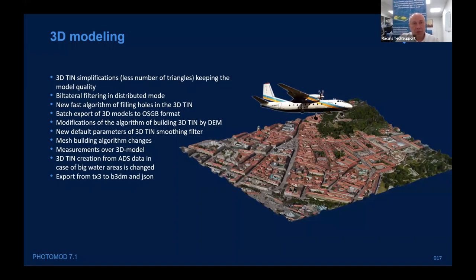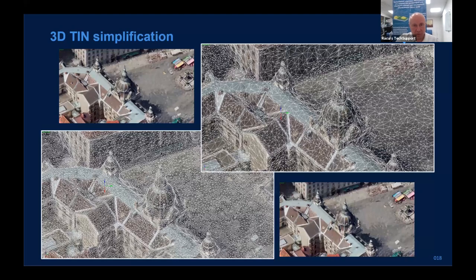3D modeling improvements: new filters, new algorithms for filling holes, a fast algorithm for filling holes, batch export, changes in mesh-building algorithm, capability to make simple measurements over 3D models, and 3D creation from ADS data. TIN simplification example: the left image has many triangles and the right has fewer, but keeping the same accuracy — it's the same precision but described by fewer triangles, which is critical given the huge data volumes used for 3D models.